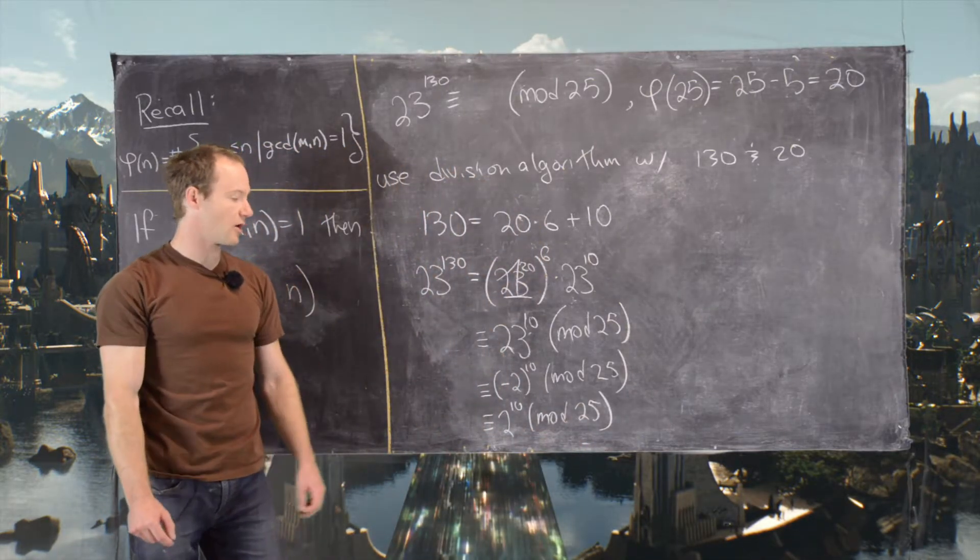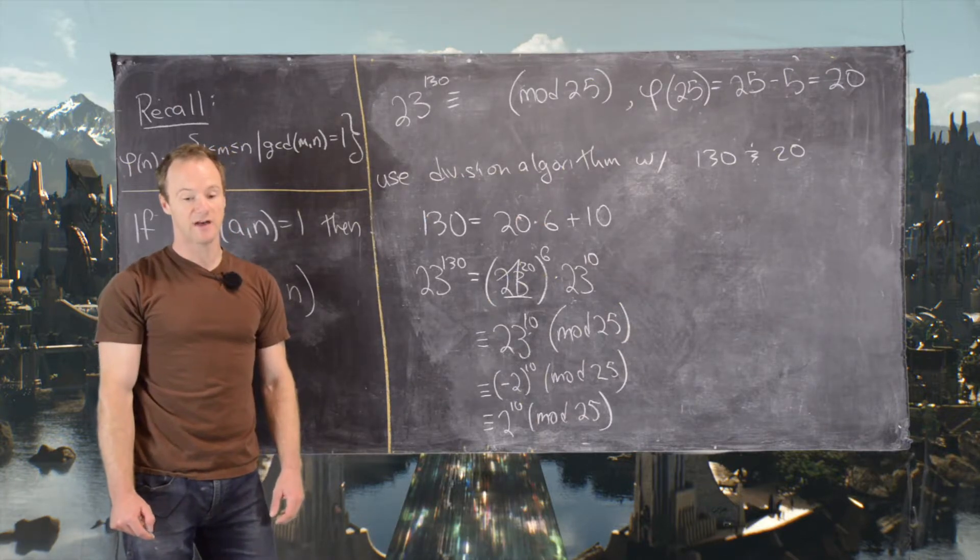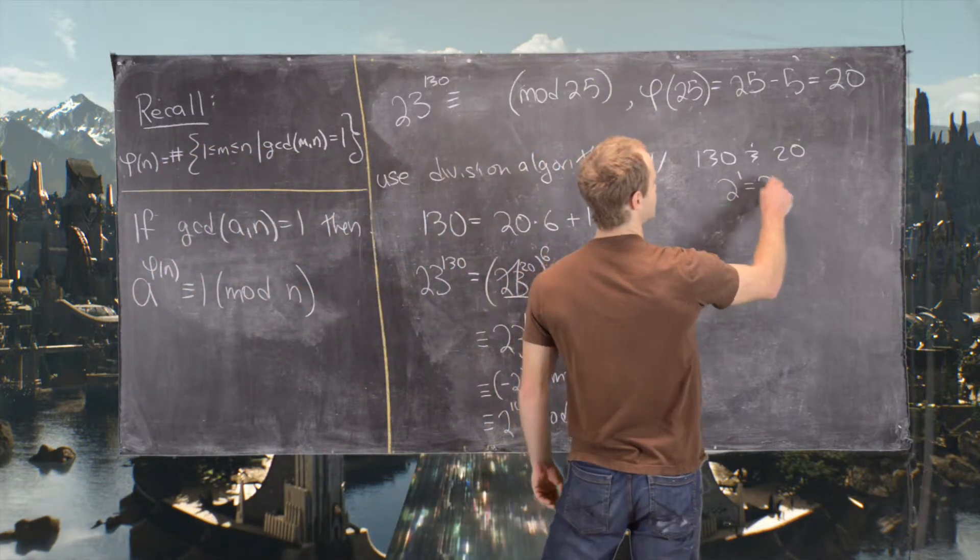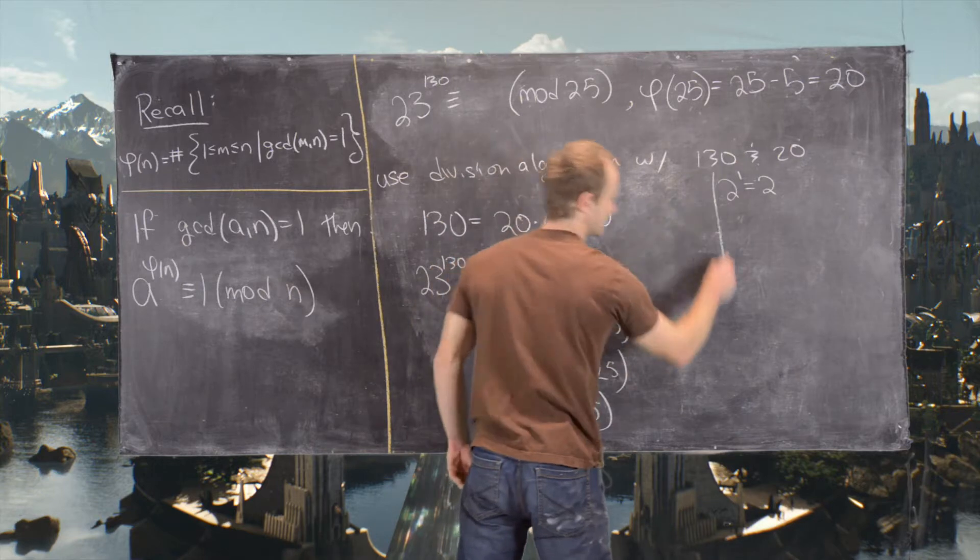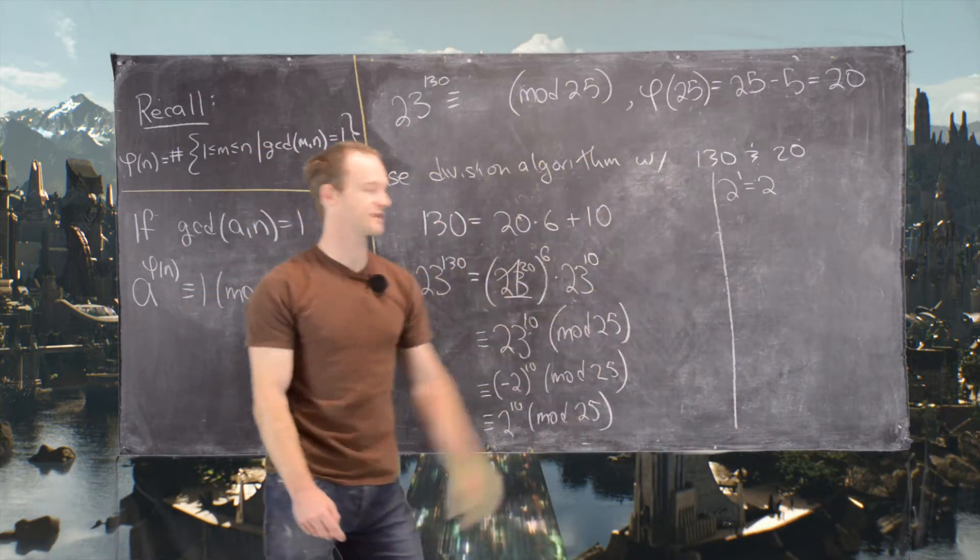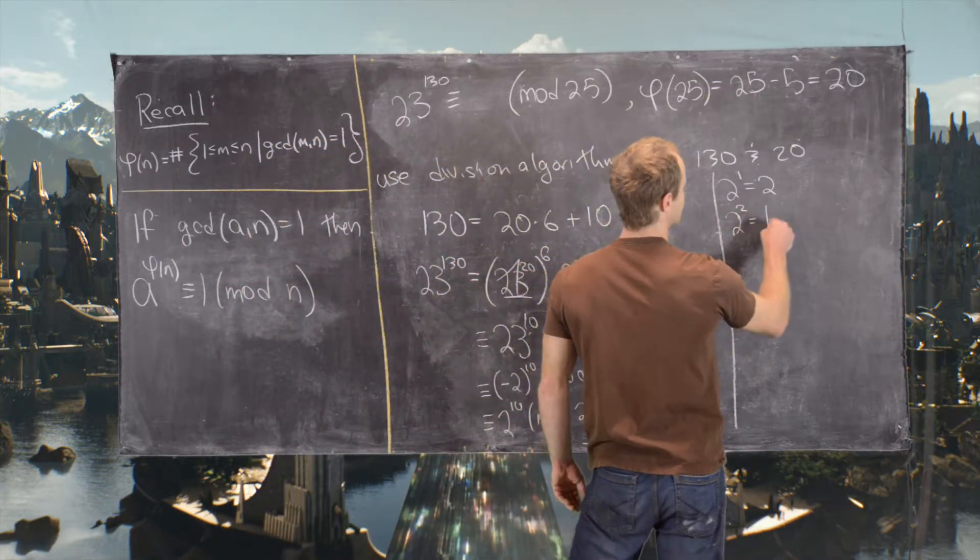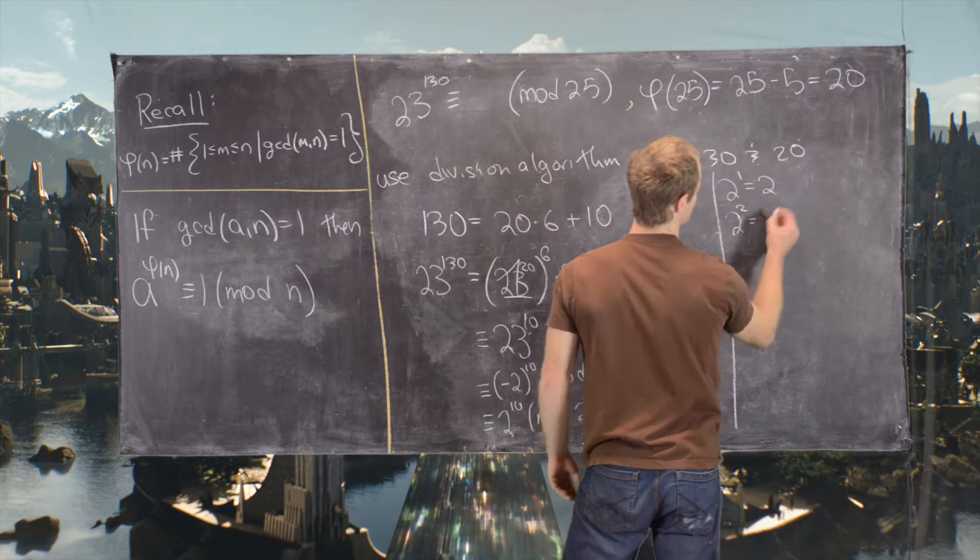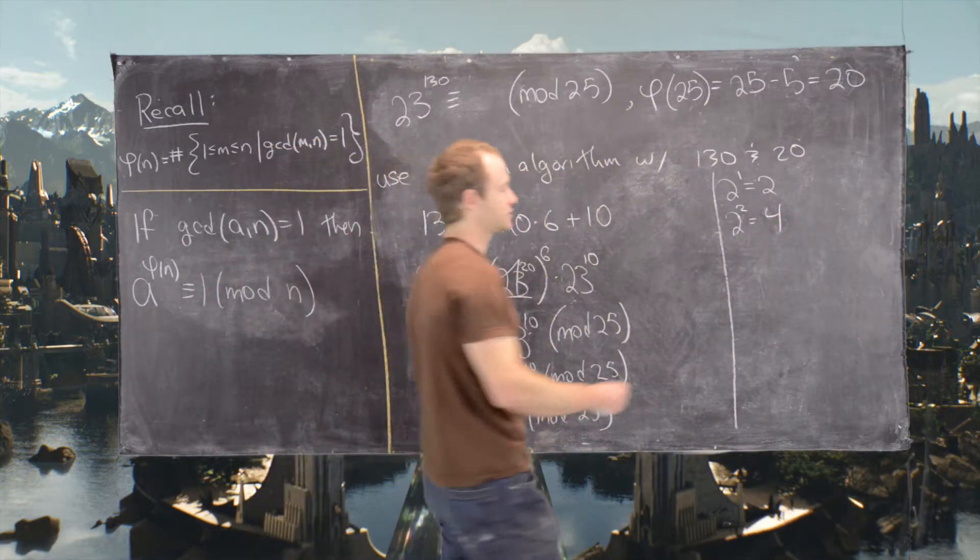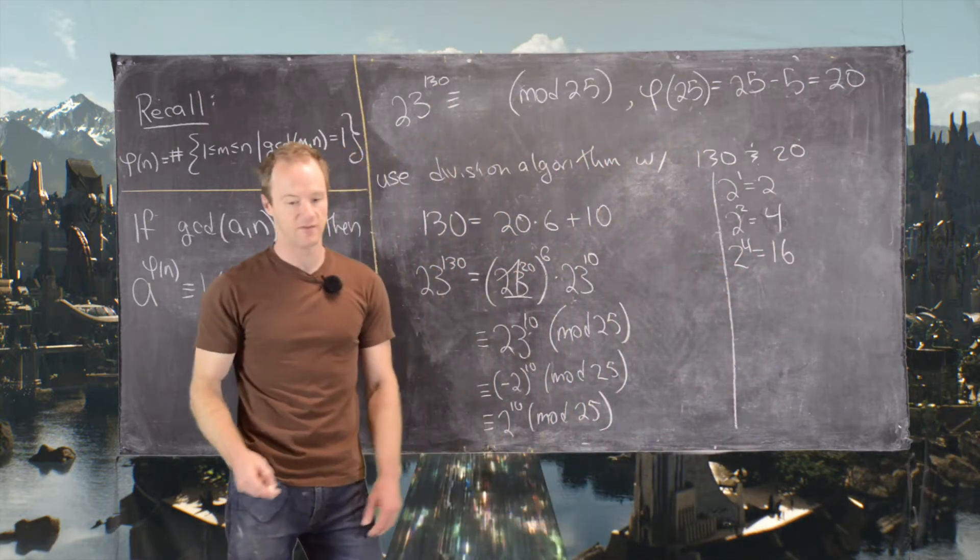And now from here we can go and calculate some powers of 2 mod 25 and see if we get a simplification. So let's see. We have 2 to the 1 is 2 mod 25. So here's a bit of scratch work. So all of this over here to the right of this line is scratch work. And then 2 squared is 4 mod 25.